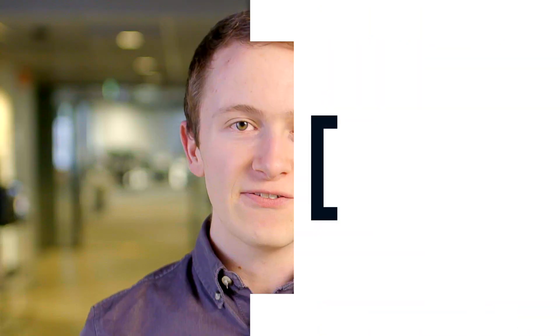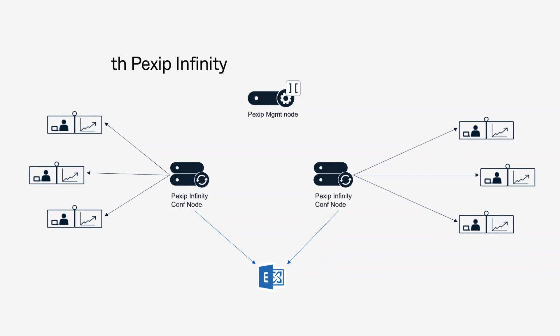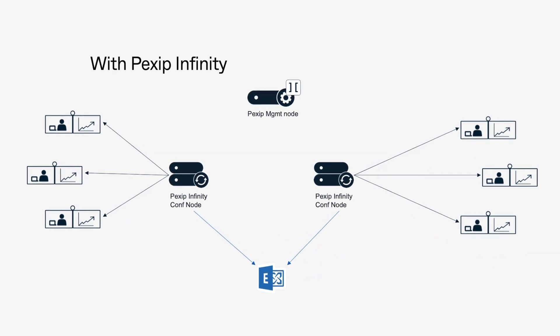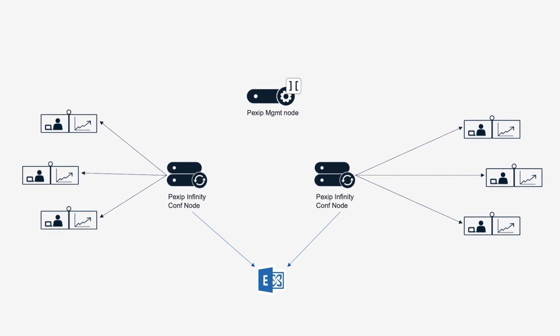OneTouch Join can be used to join any type of meeting. If you have a self-hosted Pexip deployment, OneTouch Join will use the existing conferencing nodes. These conferencing nodes communicate with Microsoft Exchange and Google Calendar to get the meeting details and send them to the correct endpoint.